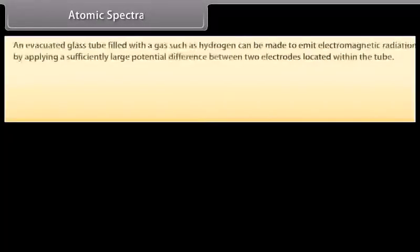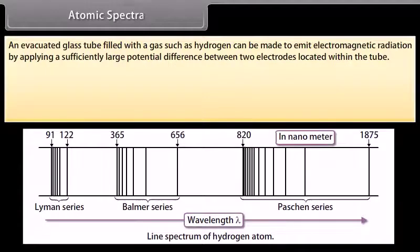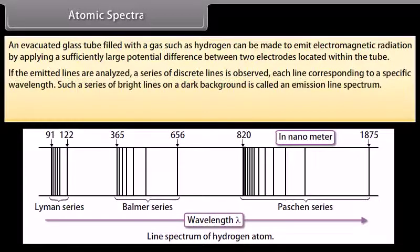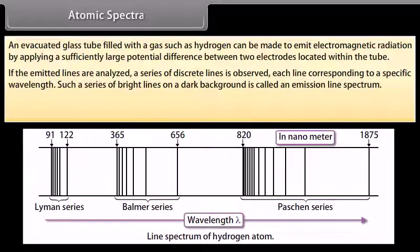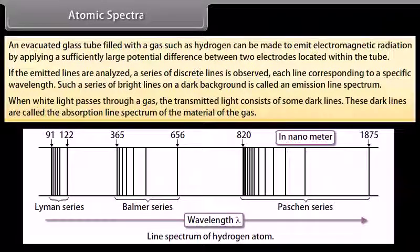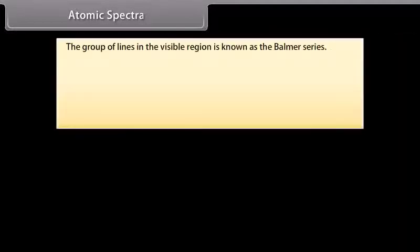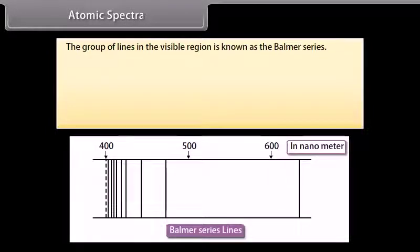An evacuated glass tube filled with a gas such as hydrogen can be made to emit electromagnetic radiation by applying a sufficiently large potential difference between two electrodes within the tube. If the emitted light is analyzed, a series of discrete lines are observed, each corresponding to a specific wavelength — this is called an emission line spectrum. When white light passes through a gas, the transmitted light shows dark lines called the absorption line spectrum. The group of lines in the visible region is known as the Balmer series.